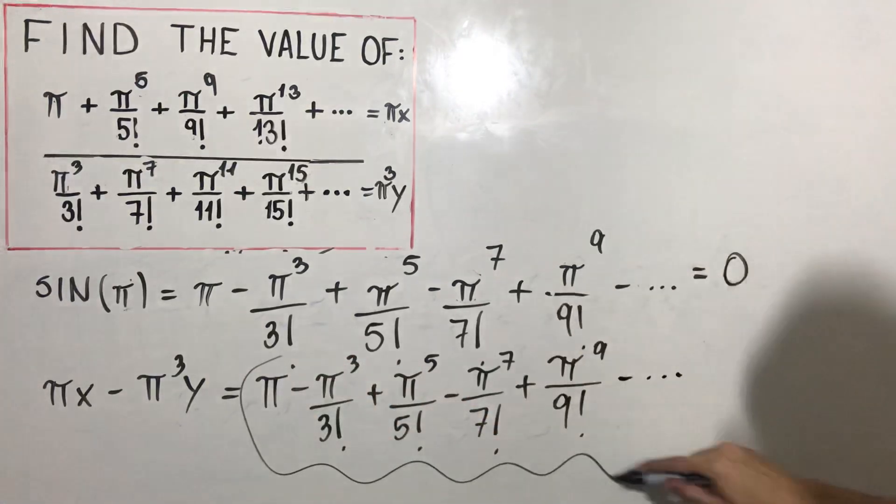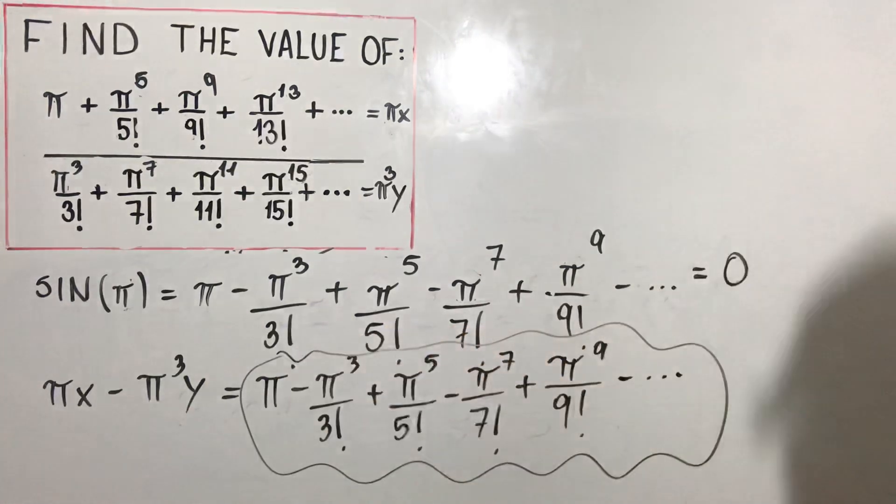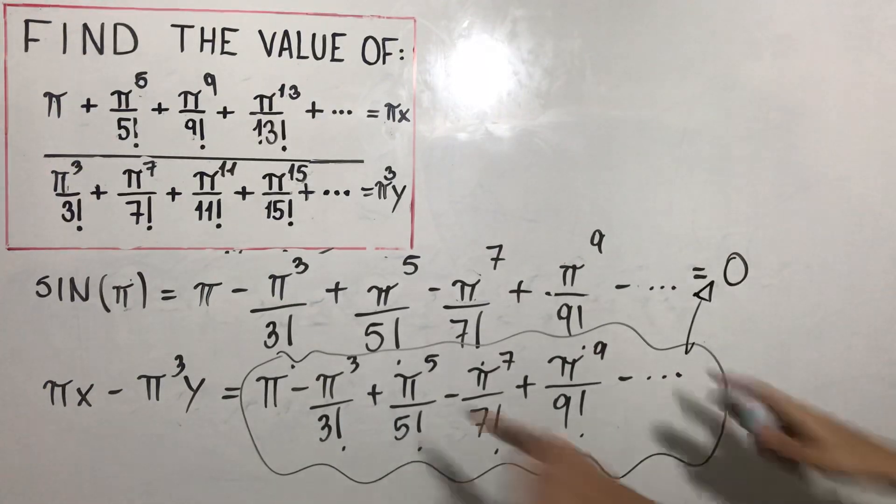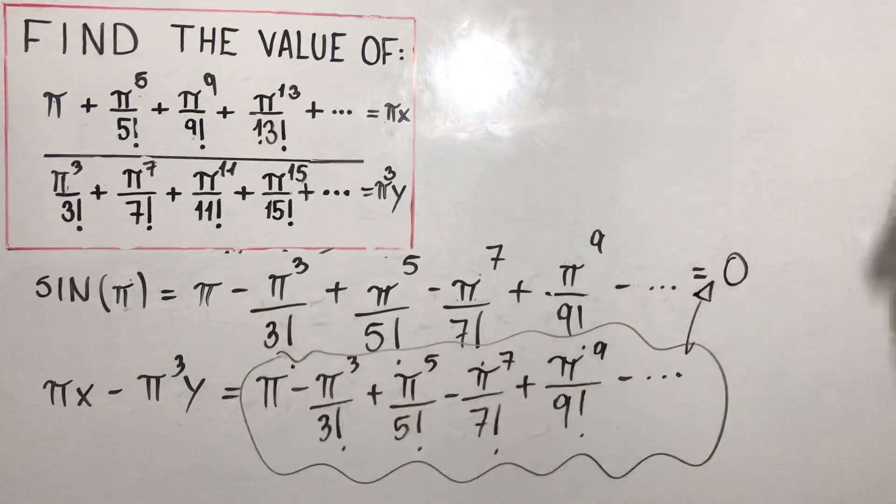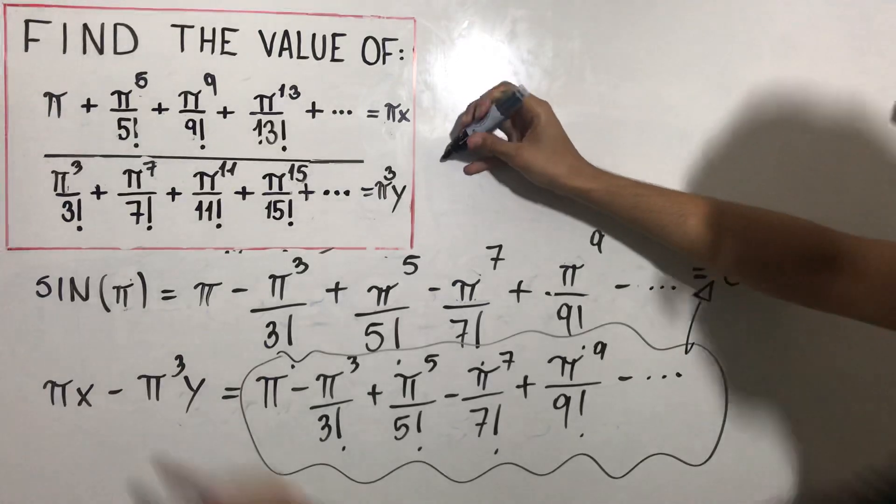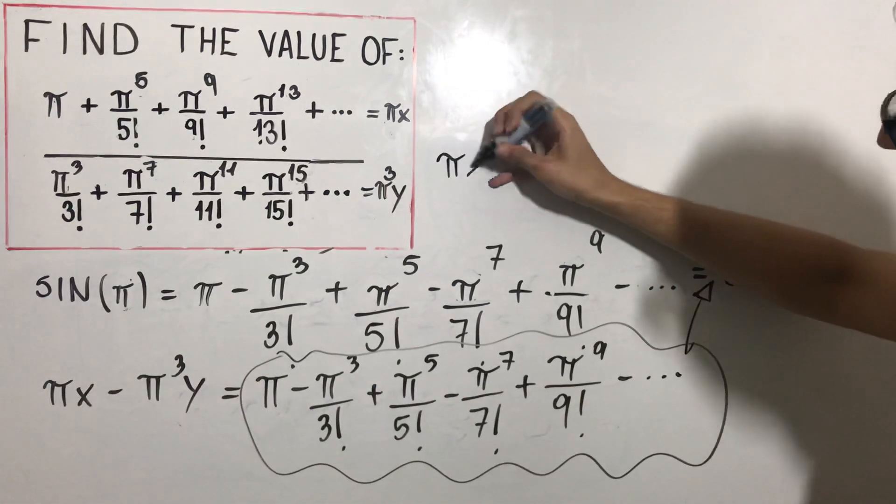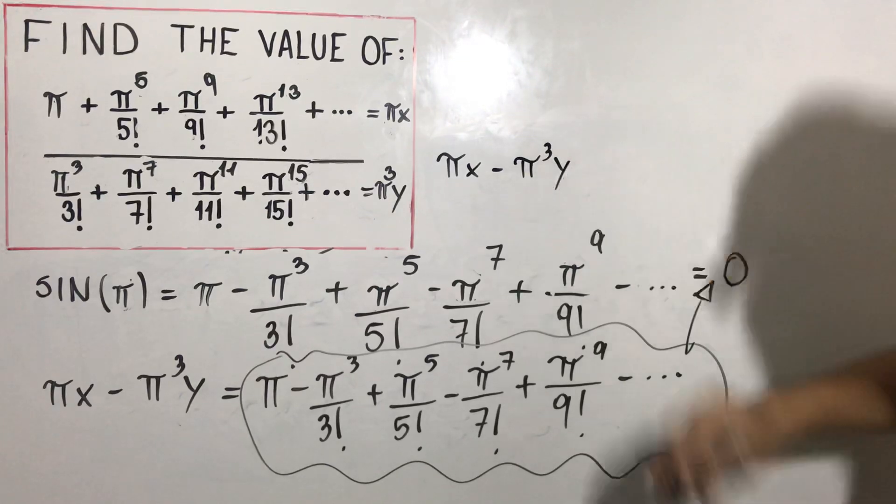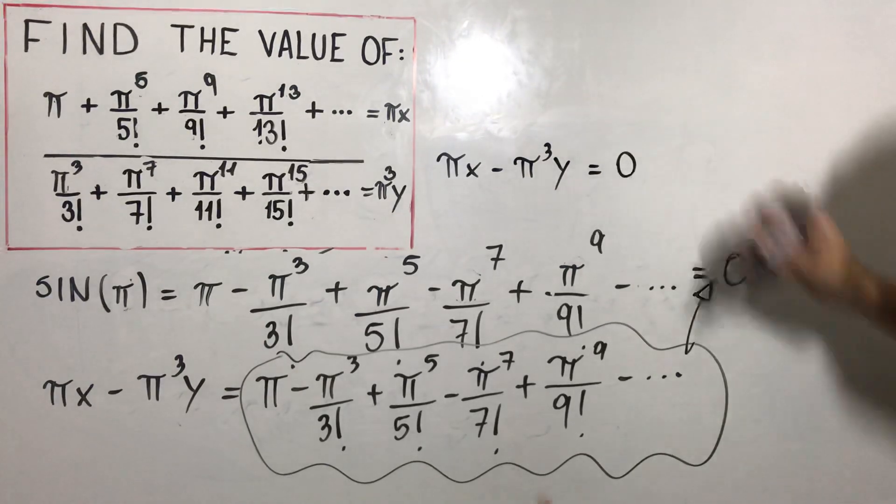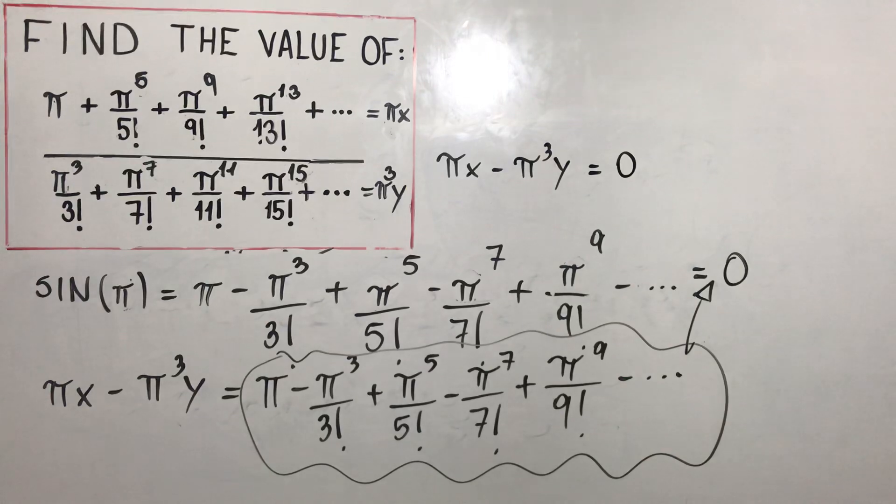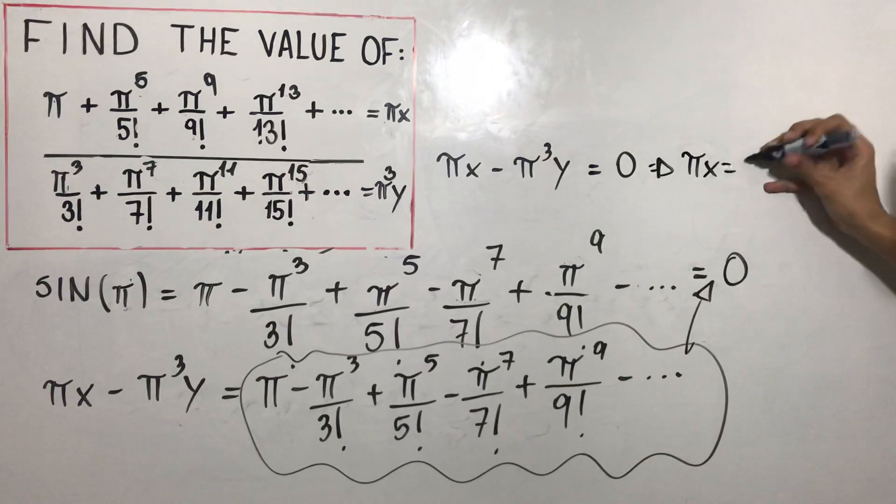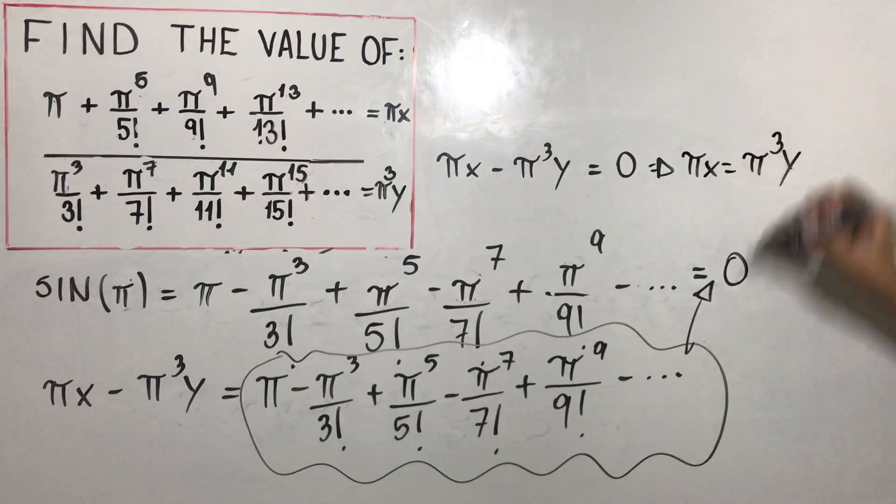But we know that this whole thing, this whole thing, is equal to zero. It's the same thing buddy, it's the same thing. So I can say that πx minus π³y is equal to zero.